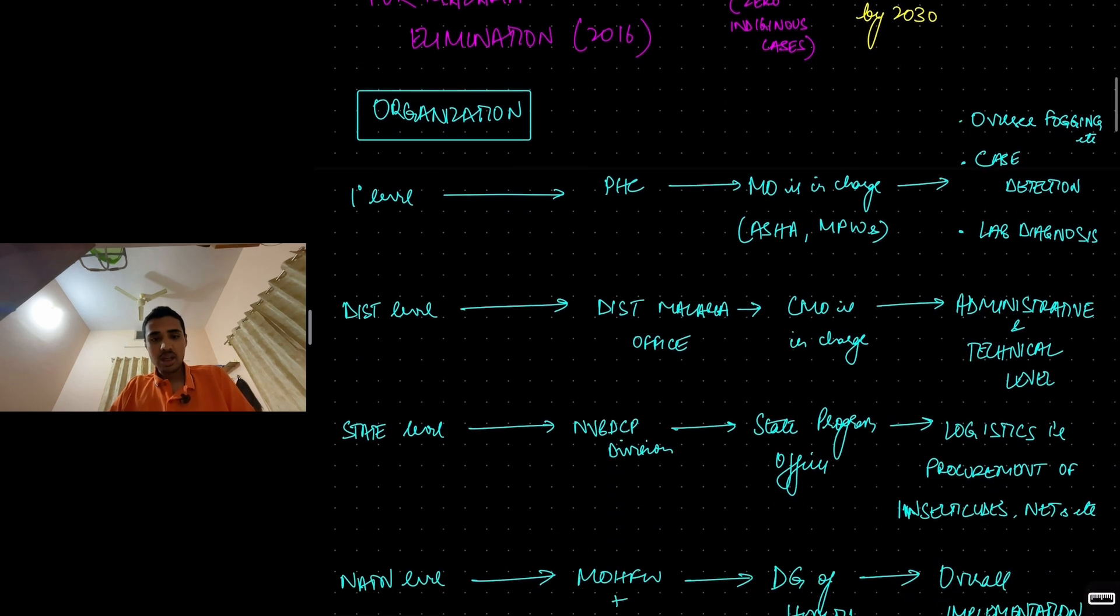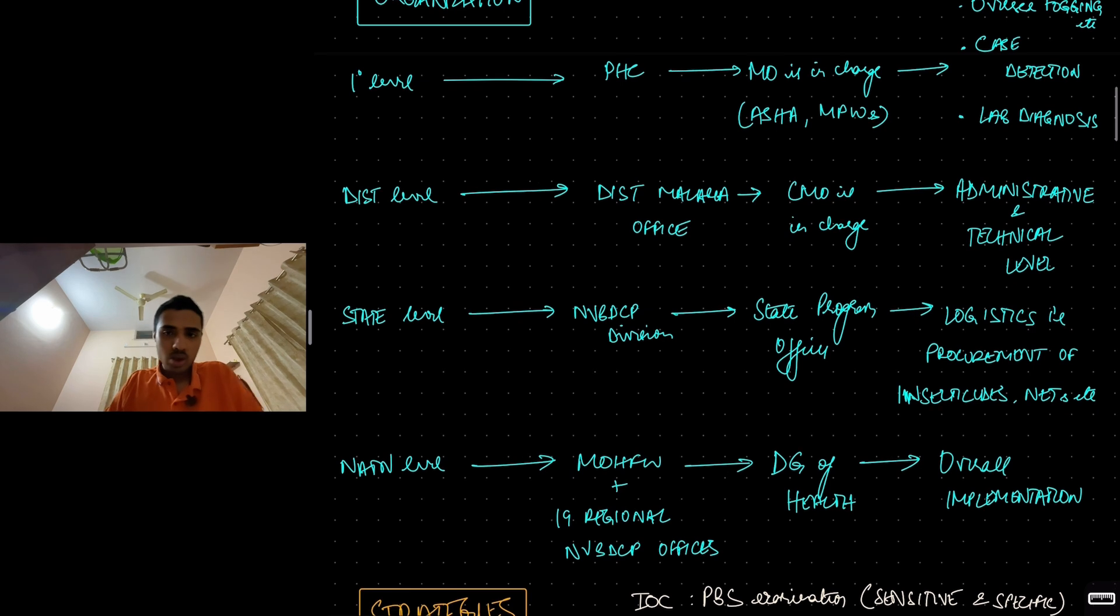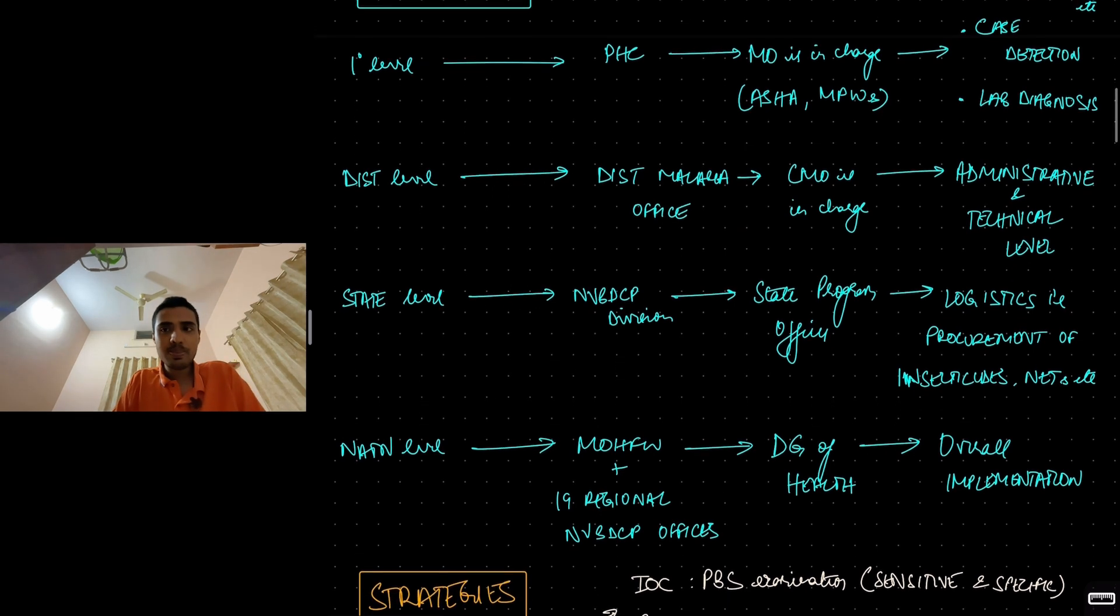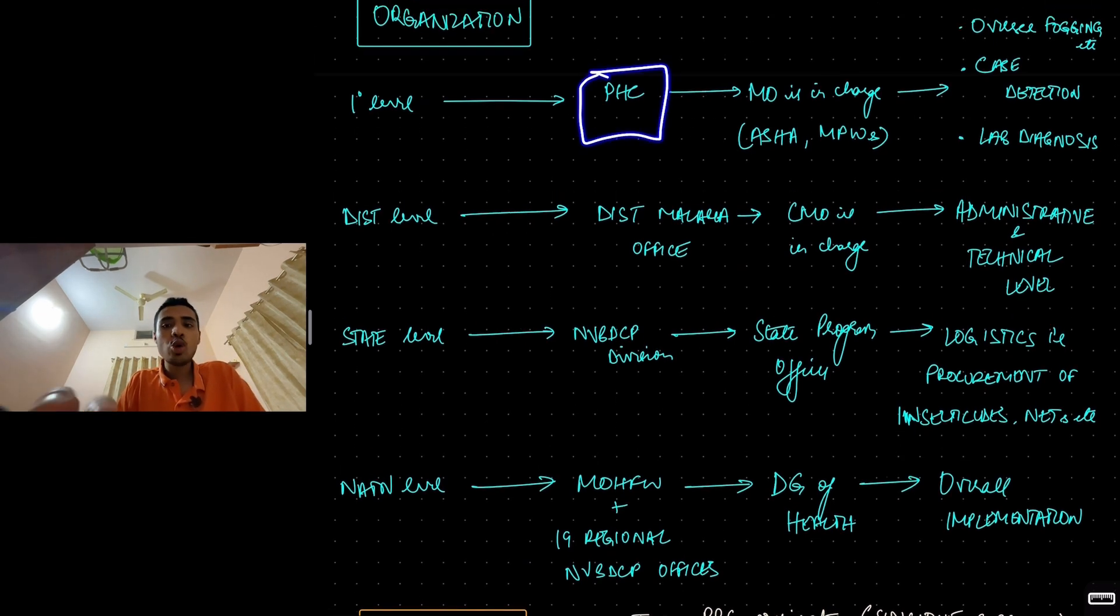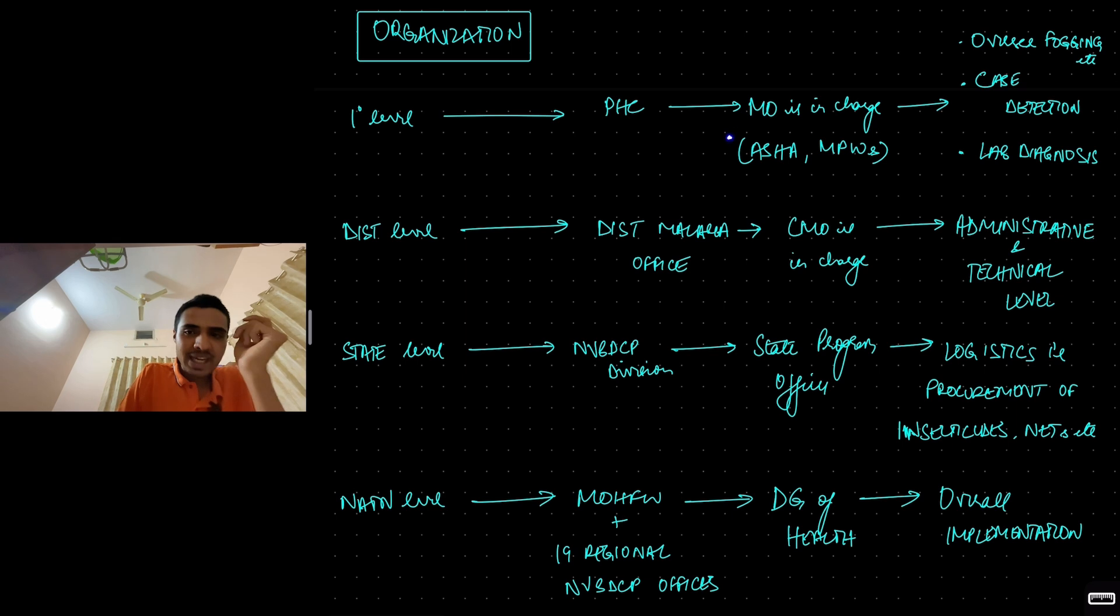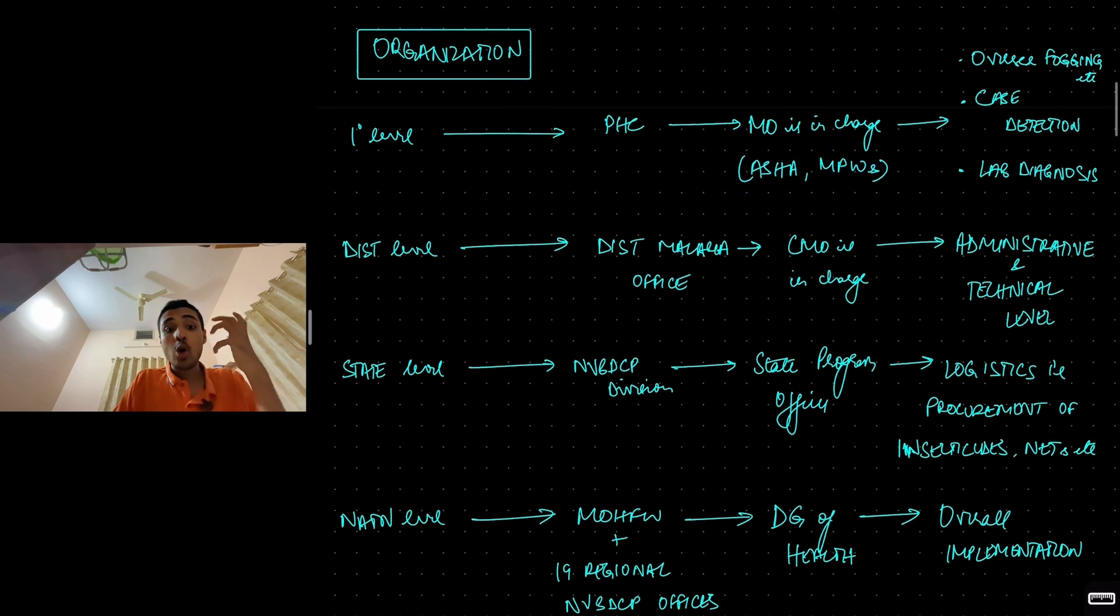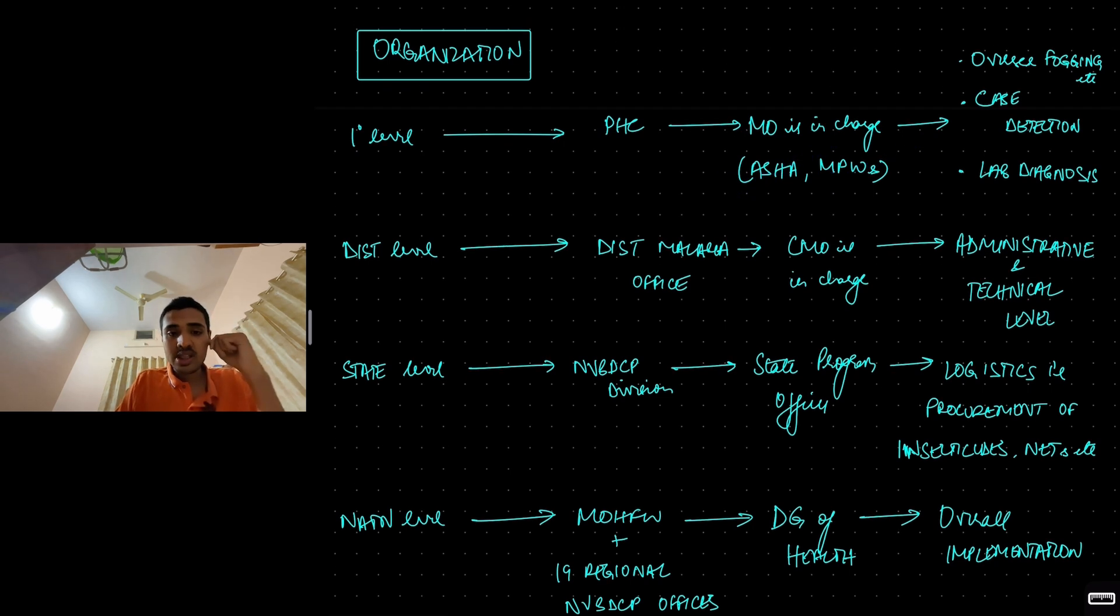Organization. Let's go from grassroot level, primary level. What is the center? That is PHC. In PHC, who is in charge? The medical officer. Under him or her, you have the ASHA workers, you have the multipurpose workers, etc. What they do? They do most of the work. They oversee the fogging, the spraying. They do the case detection, case surveillance. They do the lab diagnosis, blood smear examination, etc.